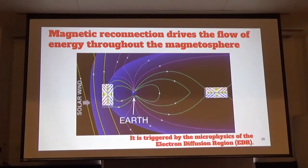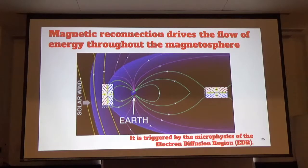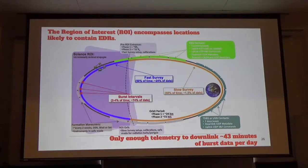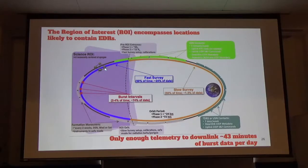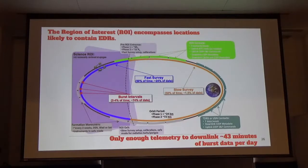This global flow of magnetic energy is triggered by the microphysics of the electron diffusion region at the center of the reconnection region. Before MMS, only about three confirmed EDR events had been studied. MMS designed its orbit to spend the most time where reconnection is occurring. Throughout the entire orbit, MMS gets low-resolution survey data. The science region of interest is where most time is spent around the magnetopause — within this ROI, MMS can trigger burst events to get high-resolution data. But we only have roughly 43 minutes of burst data per day, and only a little time to select that data before it's overwritten.